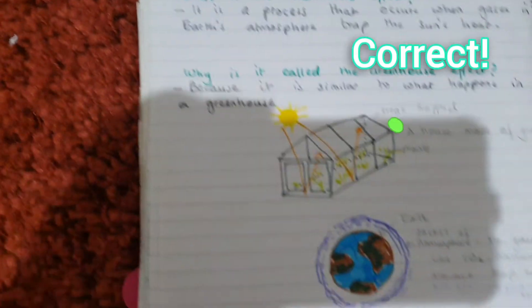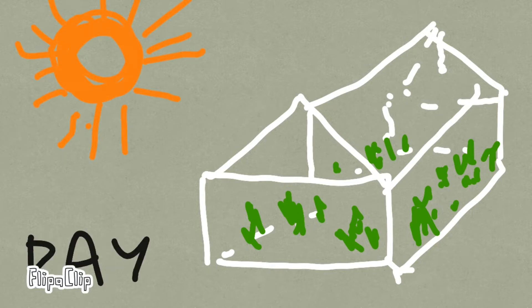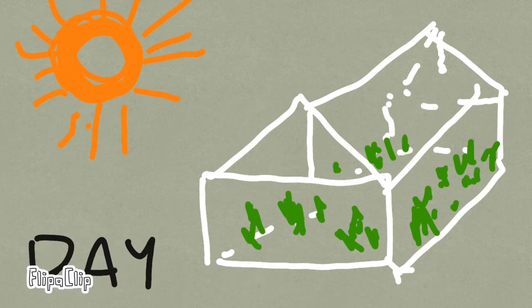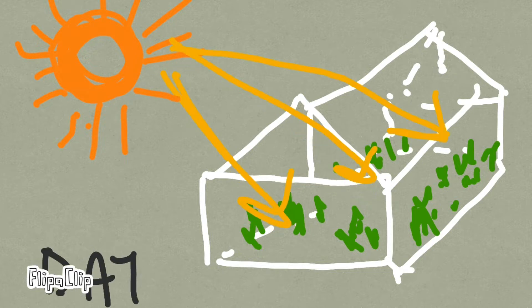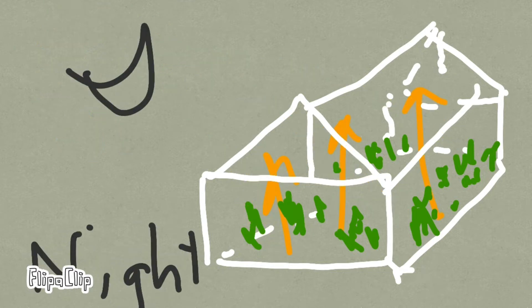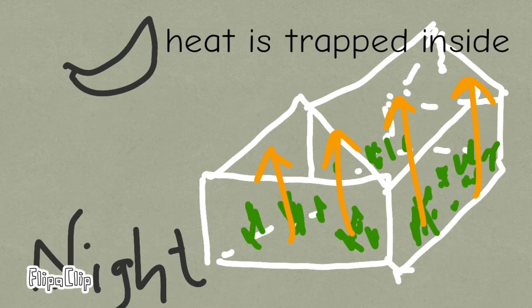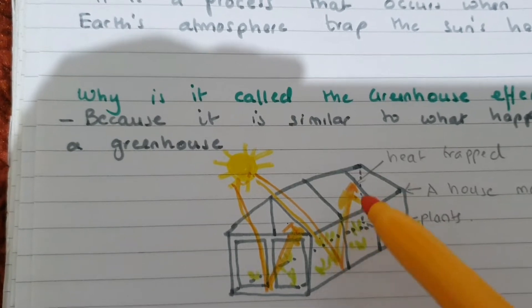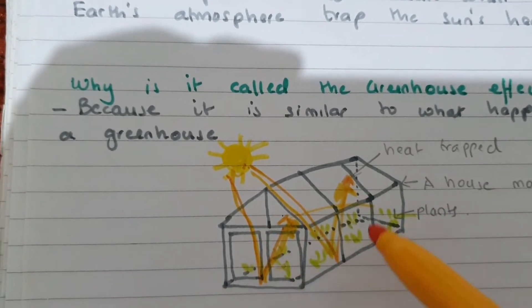You are correct. So a greenhouse is a house made of glass and it has plants inside. During the day, the rays of the sun and the heat can get into it. But by the time it's night, it cannot escape — it is trapped inside. And that is what provides warmth for the plants, helping maintain a good temperature within the greenhouse.